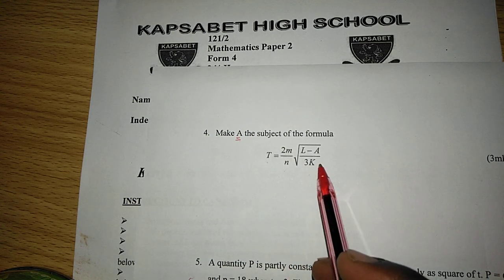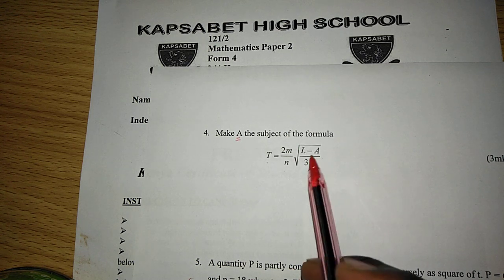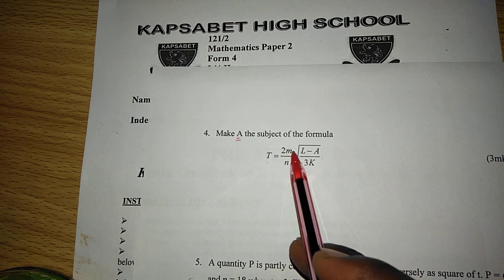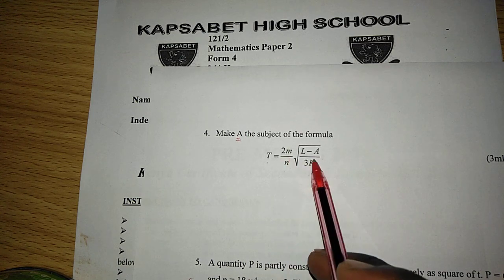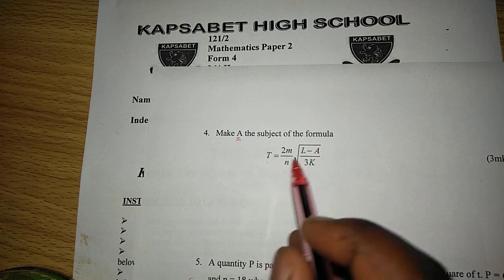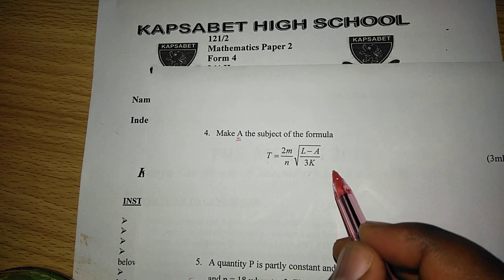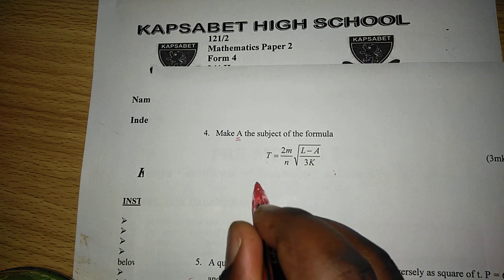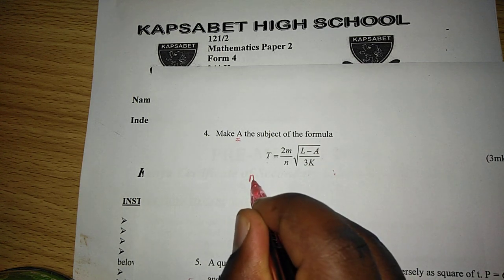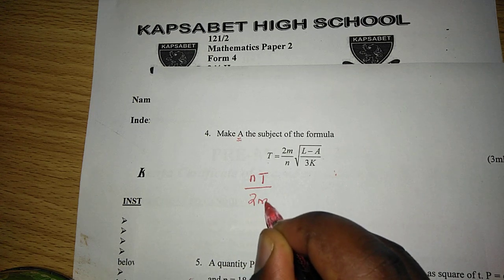Such that for us to remain with a, we can go stepwise such that we first of all deal with 2m out of n to be removed on this side. And that will be multiplying by its reciprocal, such that we multiply by n out of 2m in both cases. So as it simplifies from this side, the other side will remain with n and t out of 2m.